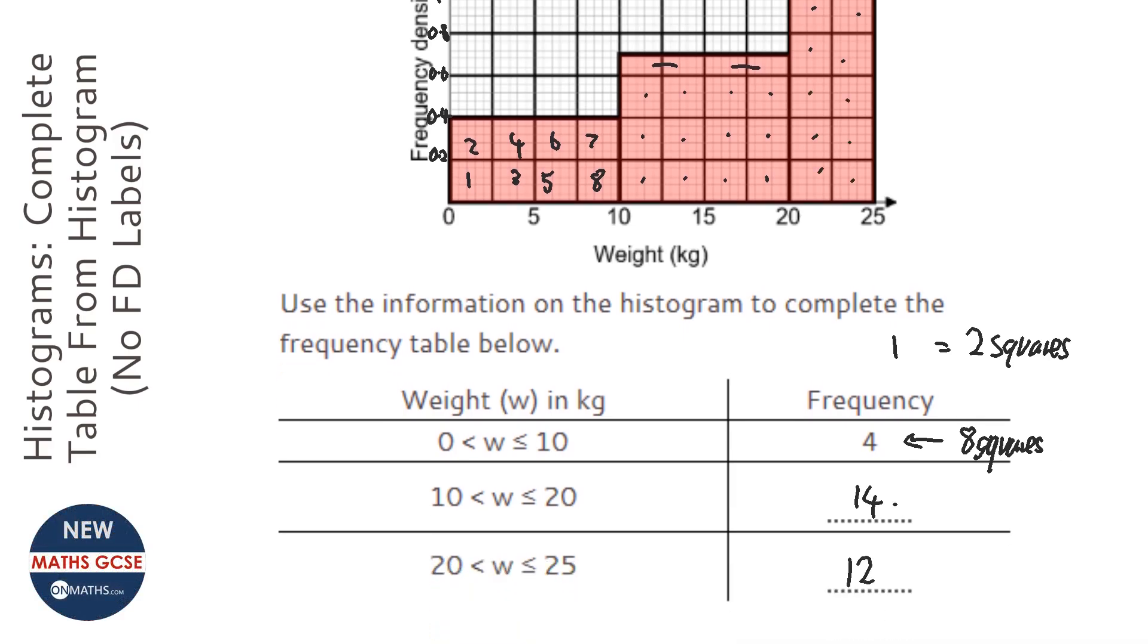And we know we need to divide them by 2. So a frequency of 7 and a frequency of 6.